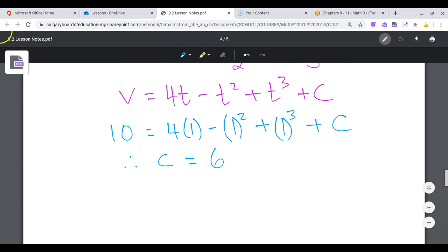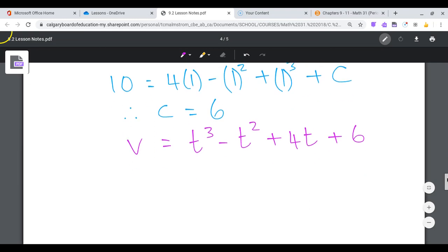So now I know my velocity function, v is equal to, I'm just going to reorder this, t cubed minus t squared plus 4t plus 6.